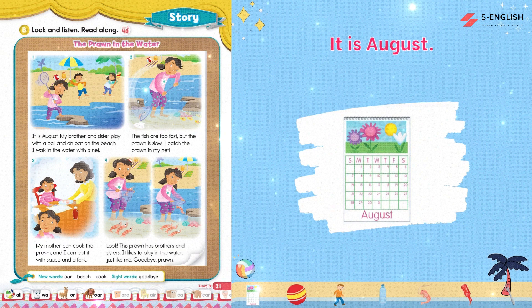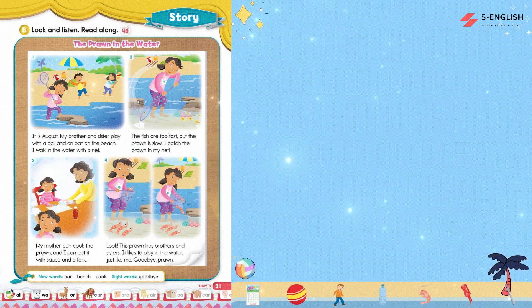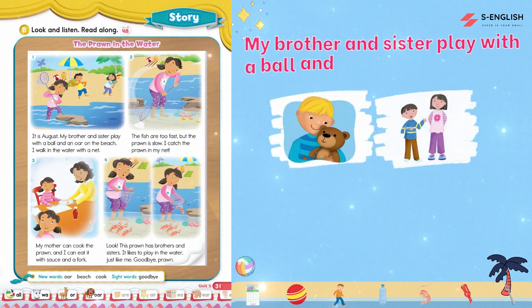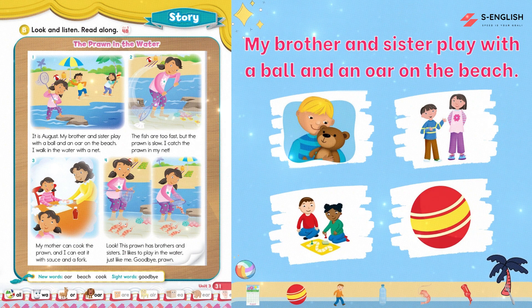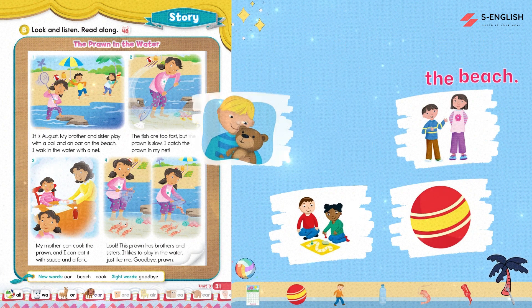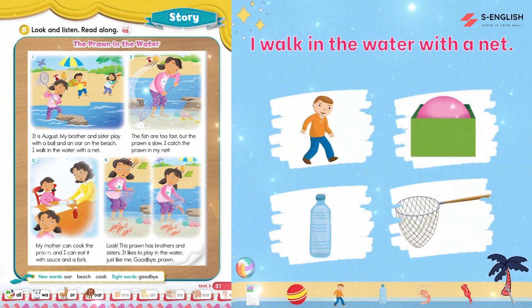One. It is August. My brother and sister play with a ball and an oar on the beach. I walk in the water with a net.